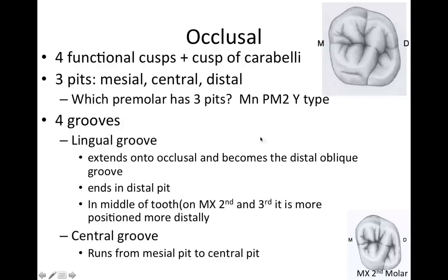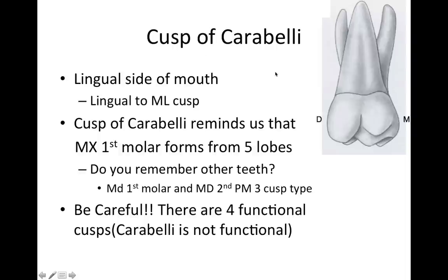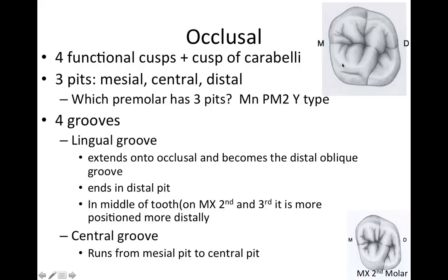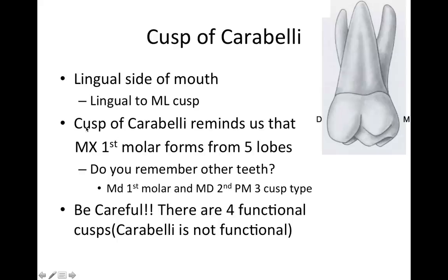The mesial border of the oblique ridge is where the mesial pit is located. The cusp of Carabelli is on the lingual side, lingual to the mesial lingual cusp. The cusp of Carabelli reminds us that the maxillary first molar forms from five lobes. The other teeth that form from five lobes are the mandibular first molar and the mandibular second premolar three-cusp type. Be careful: there are only four functional cusps but five lobes, because the cusp of Carabelli is not functional.